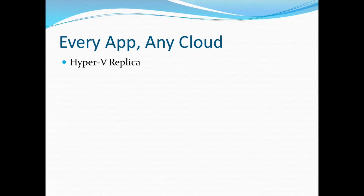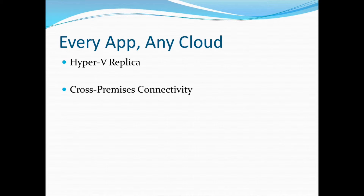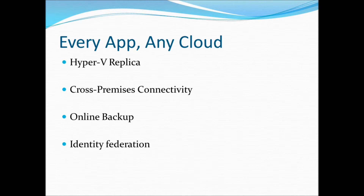Windows Server 2012 provides the most highly cloud-optimised operating system available today. VPN site-to-site functionality in remote access provides cross-premises connectivity between enterprises and hosted service providers. Online backup can help reduce the costs associated with backing up storage and management. It is possible to backup to the Microsoft online backup service powered by Windows Azure. Identity Federation with Microsoft Active Directory Federation Services allows for a common identity framework between on-premises and cloud solutions, including the extension of Active Directory identities to access cloud resources.